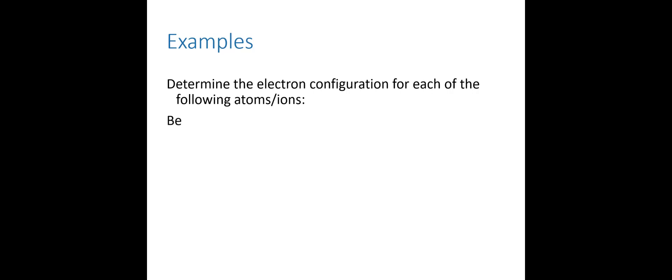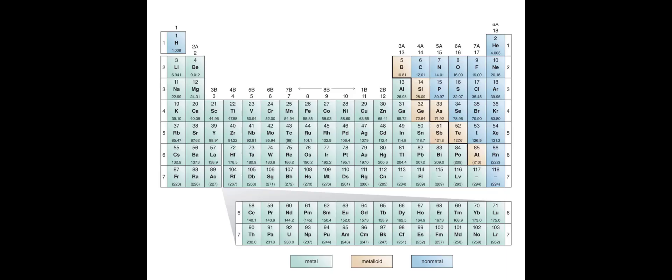Let's determine the electron configurations for each of the following: beryllium, nitrogen, sodium, vanadium, and iodine. Write those down if you haven't already. I'm going to go one slide forward to show you a periodic table, so pause the video and attempt all of these electron configurations. If you're getting stuck, unpause it and watch one example, then try to finish from there.